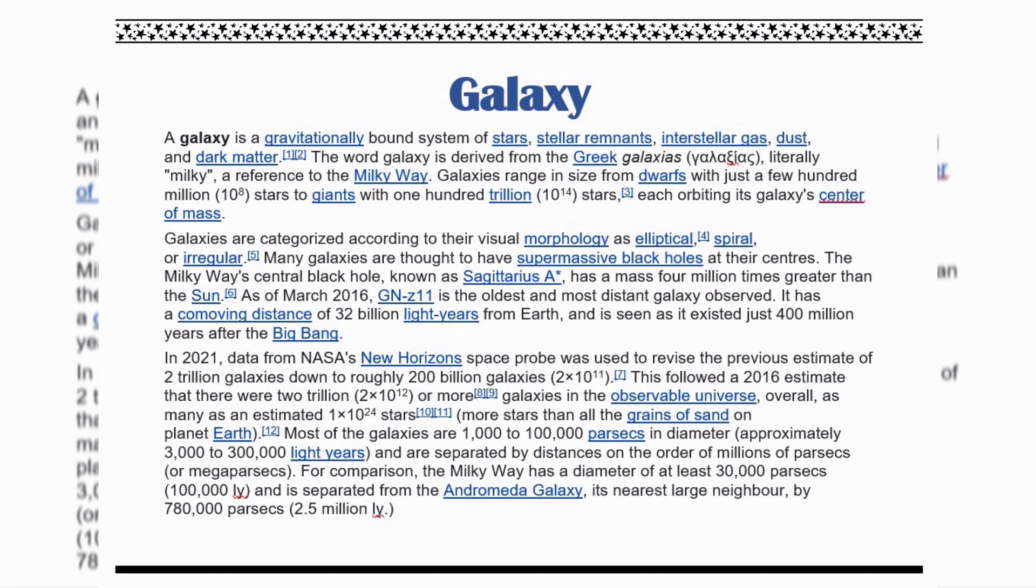As of March 2016, GNZ 1111 is the oldest and most distant galaxy observed. It has a co-moving distance of 32 billion light years from Earth and is seen as it existed just 400 million years after the Big Bang.